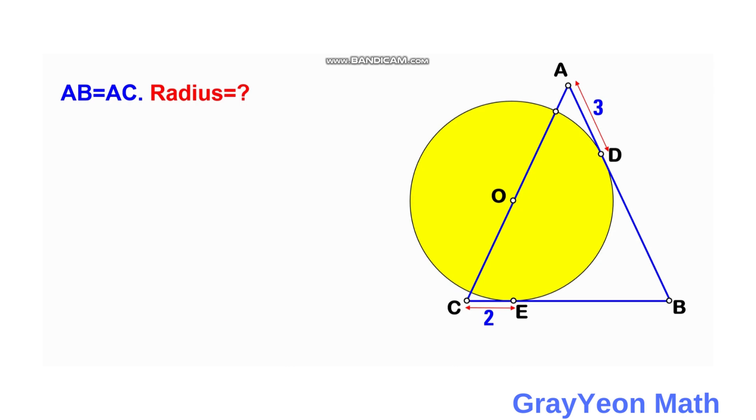We can start by noting that angle ABC equals angle ACB because it is given that AB equals AC, so these two angles are equal.